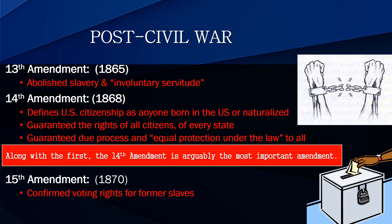The Civil War was 1861 to 1865. Afterwards, some changes had to be made because things weren't going well after the country ripped itself apart. All these amendments were passed within five years of the end of the war. The 13th Amendment abolished slavery — it said there will be no involuntary servitude in the United States anymore.